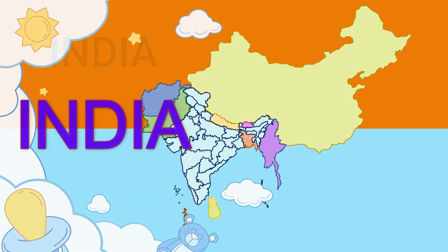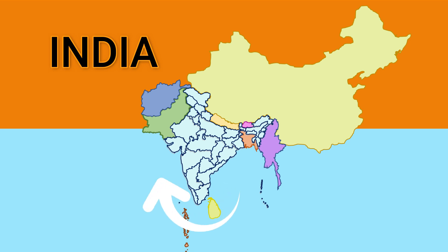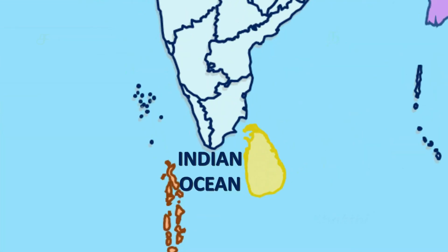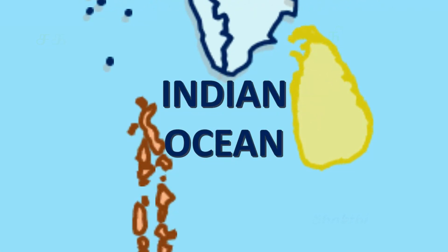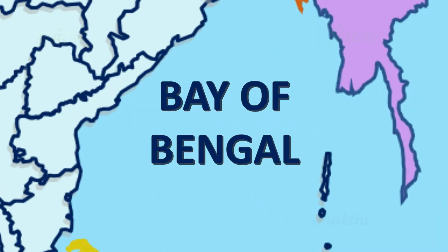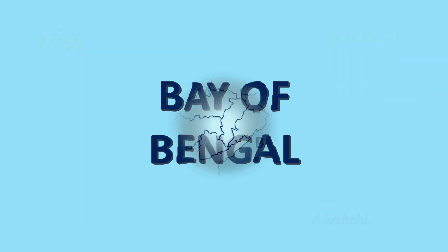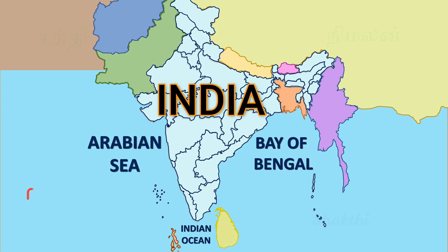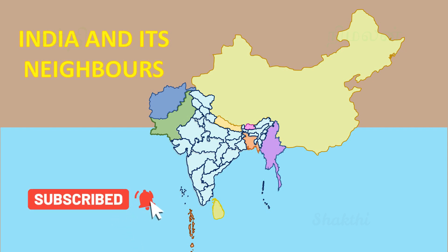India is surrounded by water bodies on three sides and land on the other. Therefore, it is a peninsula. The Indian Peninsula is surrounded by the Indian Ocean on the south, the Arabian Sea on the west, and the Bay of Bengal on the east.